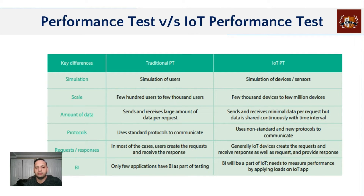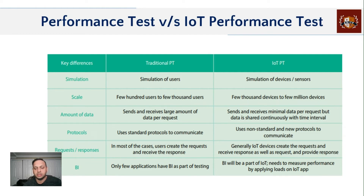In IoT, you have many more variations because each device can have multiple users associated with it, and each home can have multiple devices. When you combine all of this together, you will be dealing with thousands of devices — a huge number compared to the traditional performance testing approach.